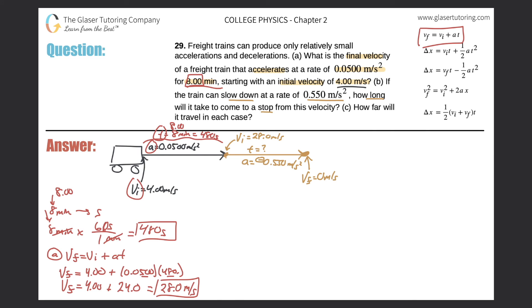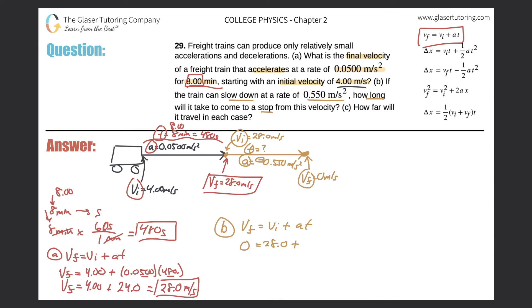At this point in the first part of the problem, the final velocity had a value of 28.0 meters per second. Now I want to find an equation relating the initial velocity, time, acceleration, and final velocity — it's the same equation again, the same one used in letter A. For part B: final velocity equals initial velocity plus acceleration multiplied by time. The final velocity is 0, and the initial is 28.0, and the acceleration is negative 0.550. I'm looking for time.